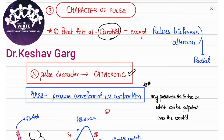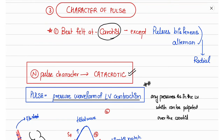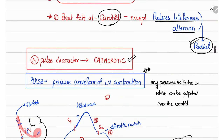The character of pulse is best felt in the carotid arteries, except in the case of pulsus bisferiens and pulsus alternans, in which the radial artery is preferred. The normal pulse character is of catacrotic type.